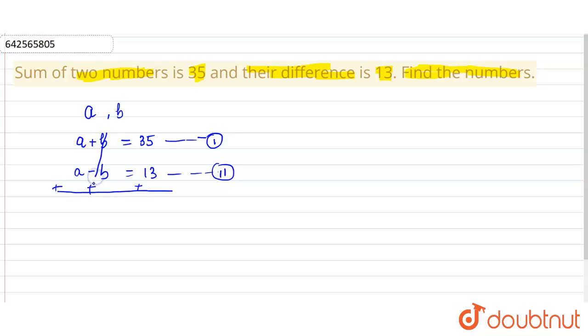We will cancel out B and minus B, so 2A is equals to 48. So we will have A is equals to 24.